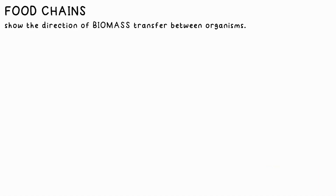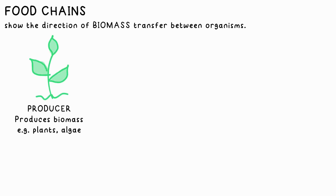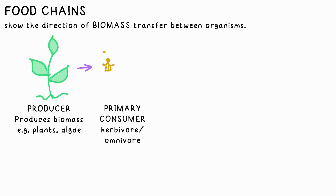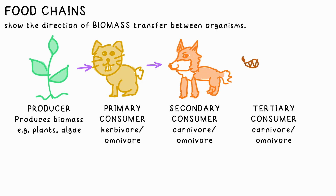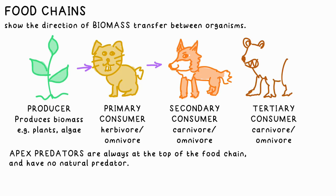A food chain shows the direction that biomass, and therefore energy, flows in an ecosystem from one trophic level to another. Producers are any organisms that use sunlight to produce biomass — that's usually plants or algae. Primary consumers eat the producers; that's herbivores that only eat plants, or omnivores that eat both meat and plants. Then predators, known as secondary consumers, that could be carnivores or omnivores, prey on these. And then we can have tertiary consumers as well. Apex predators are at the top of the food chain — they have no natural predator above them.